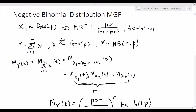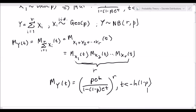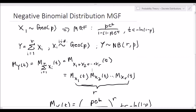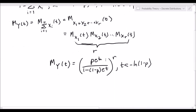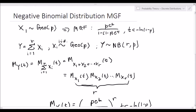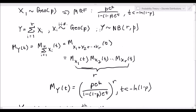That's how we derive the moment generating function for the negative binomial distribution. Just as a reminder, Y models the number of trials until the r-th success, so there is no ambiguity about which formulation of the negative binomial distribution we are talking about. This derivation made use of the relationship of the negative binomial distribution to the geometric distribution and the geometric distribution's moment generating function derived in an earlier video.